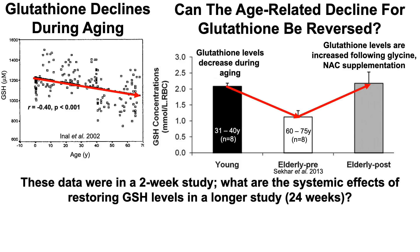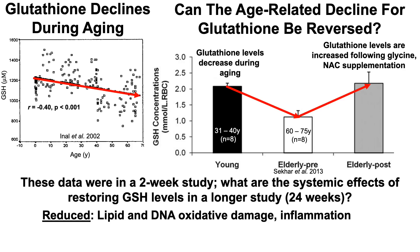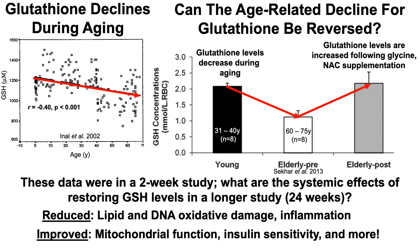The authors then published a longer 24-week study attempting to restore glutathione levels again with glycine and N-acetylcysteine supplementation, examining the impact on various health-related parameters. Briefly, they saw reductions in lipid and DNA oxidative damage and reductions in inflammation, as well as improvements in mitochondrial function, insulin sensitivity, and a few other measures.